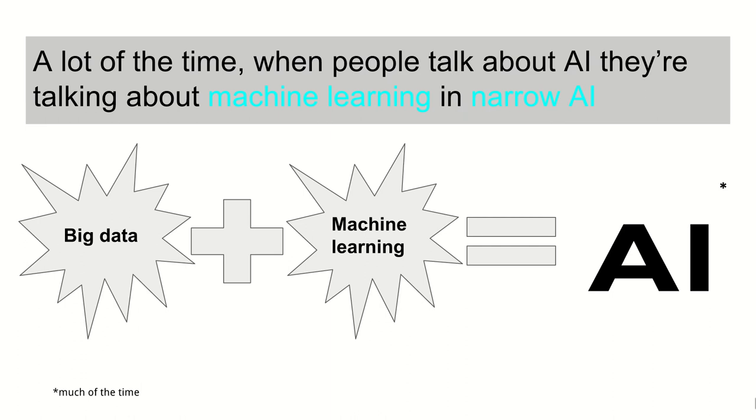So in a sense what I'm saying is that a lot of the time when people talk about AI they're talking about machine learning and they're talking about narrow AI. And this is where I bring in my second big buzzword of the talk and that is big data. And a lot of people are saying that big data plus machine learning is what's going to give us actual artificial intelligence. I think there's a lot of hype going on here but I think there's a little bit of a grain of truth inside the hype as well.